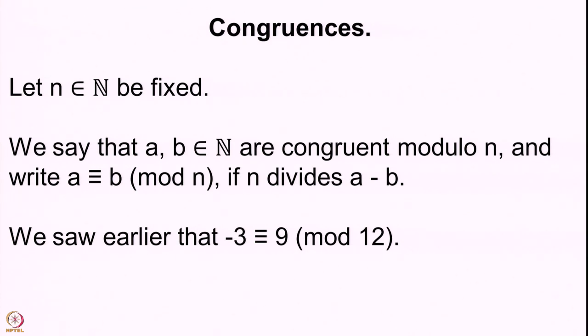So we have that n divides a minus b, then we say that a is congruent to b mod n, and we write it as a three-horizontal-lines b, bracket mod n bracket. This is for natural numbers, but we also saw earlier that minus 3 is congruent to 9 modulo 12.